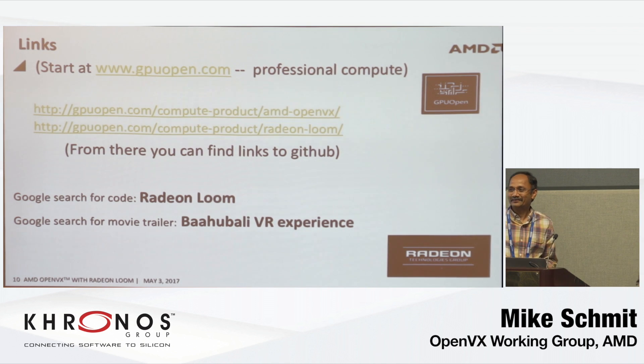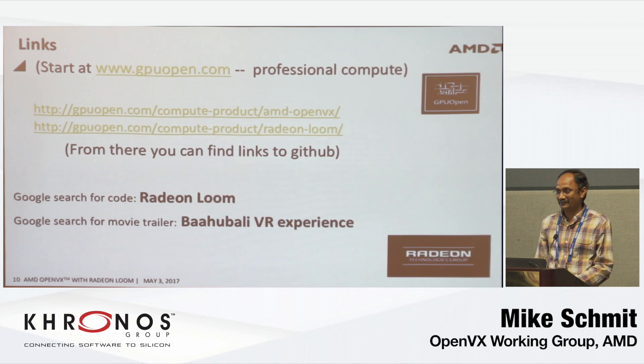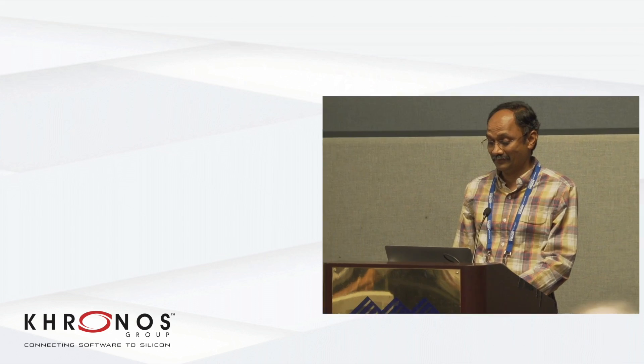Q: Is this code something anyone can use, or just for AMD? A: It's open source, MIT license — you can use it for whatever you want. The stitching has applications beyond VR, like automotive surround view around a car. You have to be careful there from a safety perspective since blending might mean you're not seeing exactly what's physically there. Q: Very impressive work. A: Thank you.